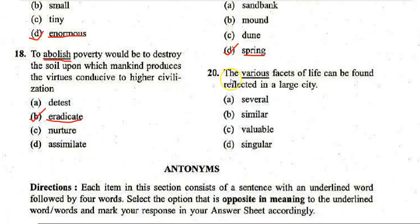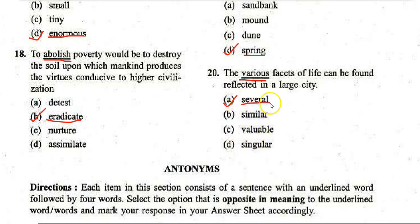Last synonym question: 'The various facets of life can be found reflected in a large city.' Options: A. Several, B. Similar, C. Valuable, D. Singular. The correct answer is A — 'several.' 'Various facets' means the same as 'several facets.'